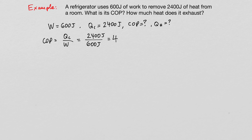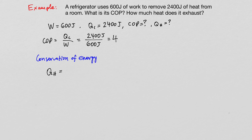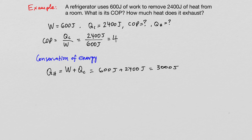To find the heat exhausted into the hot region, we use conservation of energy: QH = W + QC = 600 joules + 2400 joules = 3000 joules. And with this I'm concluding the lecture on available energy.